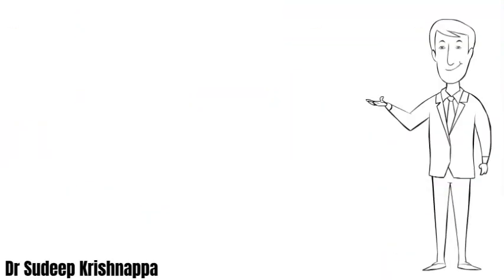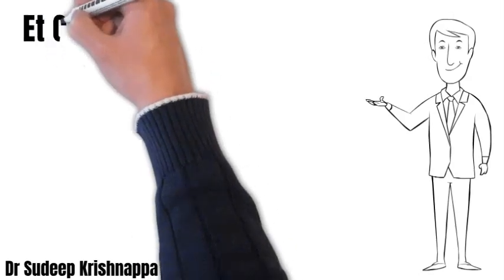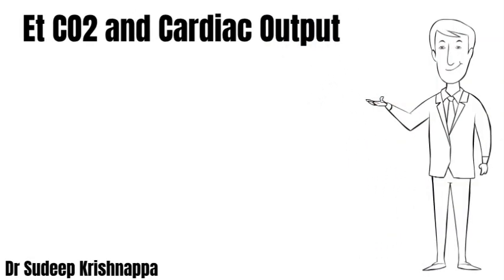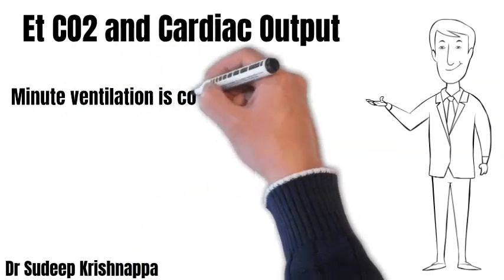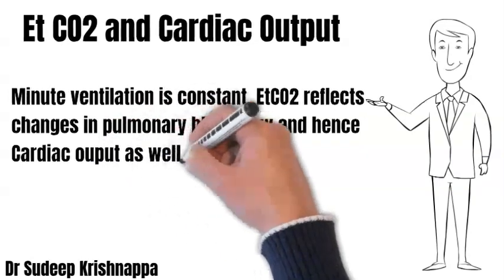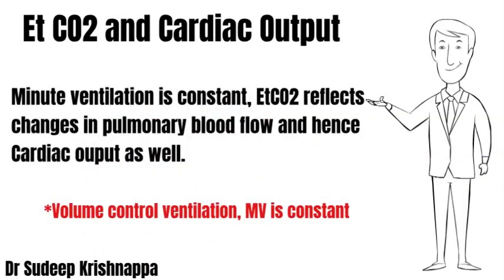End-tidal CO2 can be used as a surrogate marker for cardiac output. To summarize: EtCO2 is a function of the amount of blood coming into the lung — the pulmonary blood flow — and the minute ventilation, and how they interact. If we keep ventilation constant, any variation in EtCO2 can be explained by variation in pulmonary blood flow, which reflects right-sided output. Because right-sided and left-sided outputs are similar, EtCO2 can also be used as a reflection of systemic cardiac output.